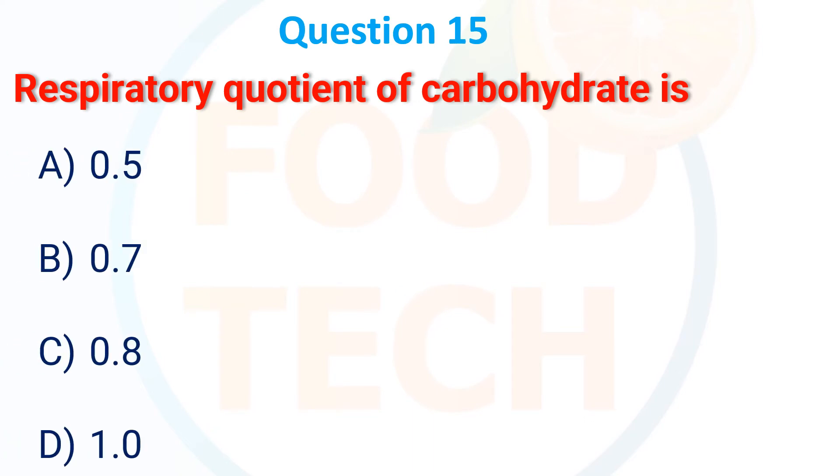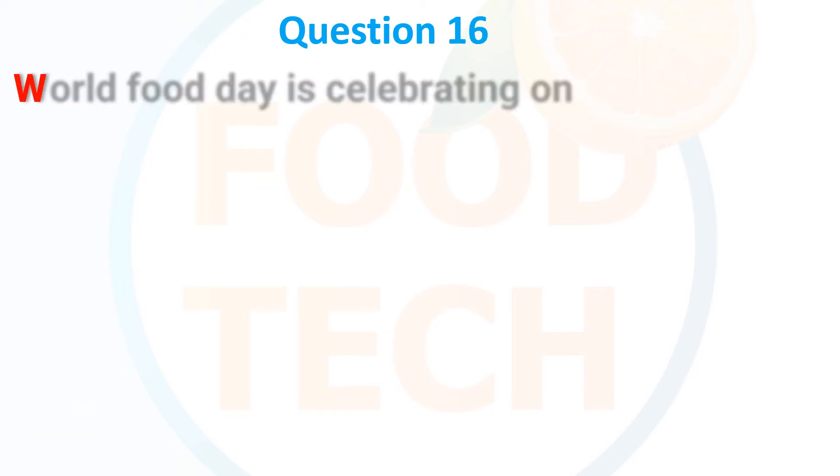Next MCQ: The respiratory quotient of carbohydrates is what value? Options: (A) 0.5, (B) 0.7, (C) 0.8, (D) 1.0. The correct answer is D — 1.0.